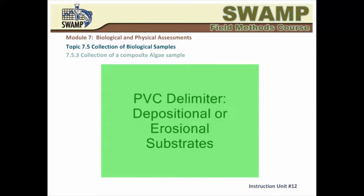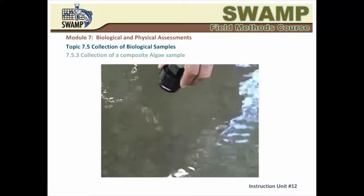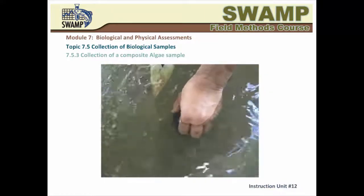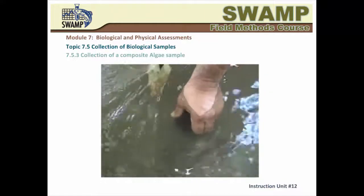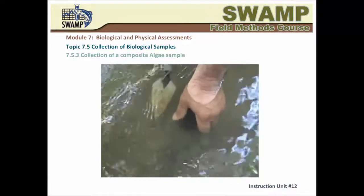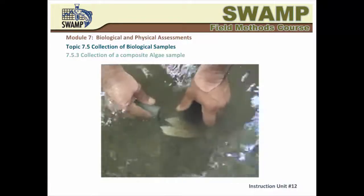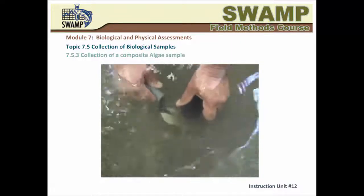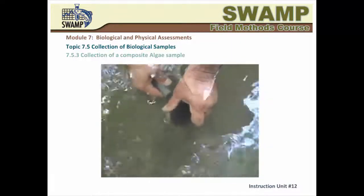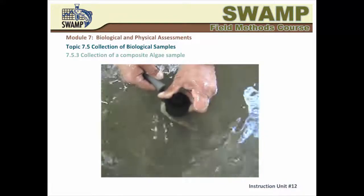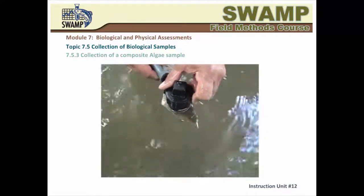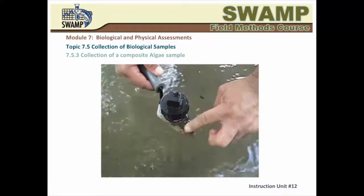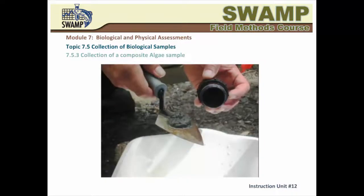If your sampling plot is in a depositional environment, you will use the PVC delimiter to collect a small core of sediment at that point. You simply insert the delimiter into the sediment to a depth of one centimeter, slide the spatula under it, bring it into the water column, remove excess particles, and empty it as-is into the bucket. The algae adhering to the particles will be removed later.